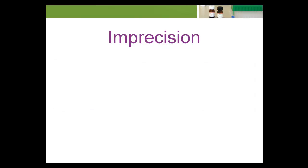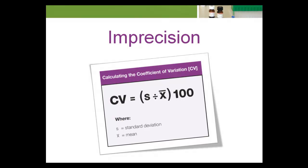The second component is imprecision. Imprecision is expressed as the coefficient of variation, CV percent. To calculate for CV percent, divide the laboratory's standard deviation by the laboratory's mean, and then convert the result into a percent by multiplying by 100.